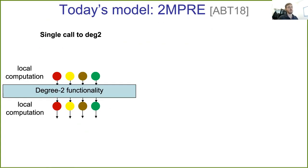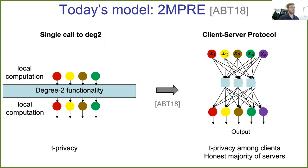Now let us move on to our main model, 2MPRE, which was introduced by Applebaum et al. This model is highly non-interactive and consists of a single call to some large degree-2 functionality. And this model is interesting because Applebaum et al showed that you can take a t-private 2MPRE and compile it into a client-server protocol that is secure with an honest majority of the servers and up to t malicious clients.